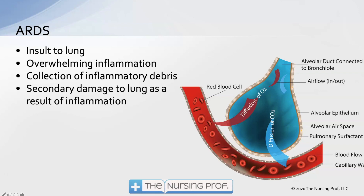Over to the right we have a picture of an alveolus and a blood vessel, showing the diffusion of both oxygen and CO2. One thing especially pertinent when thinking about that blood gas: CO2 diffuses much better than oxygen. So when we look at that blood gas, the first thing we're going to see change as we start to get edema formation in the alveolar capillary membrane is a drop in O2 first, followed by an increase in CO2 later on.